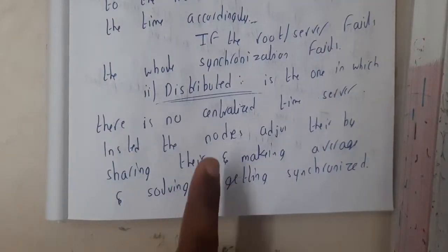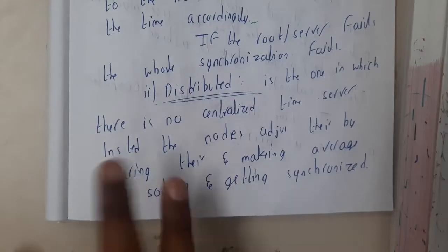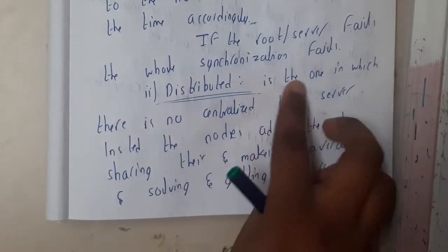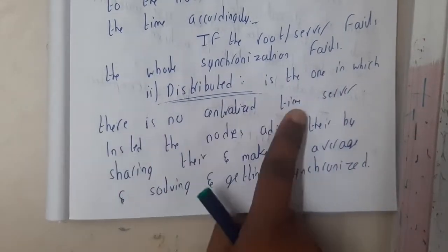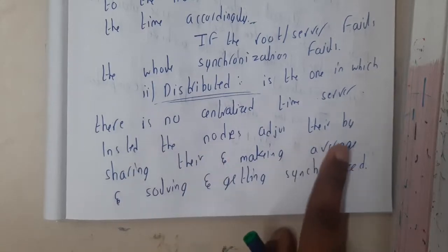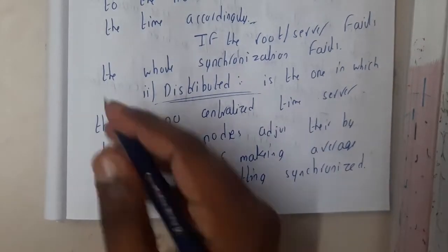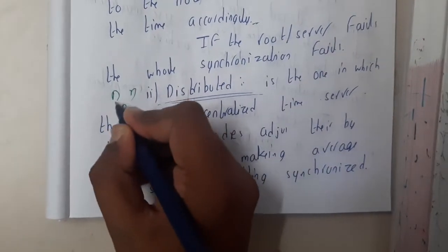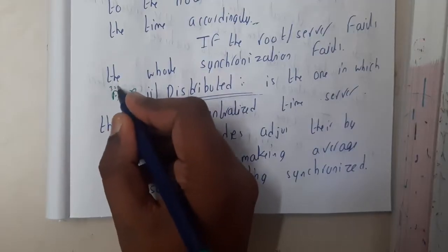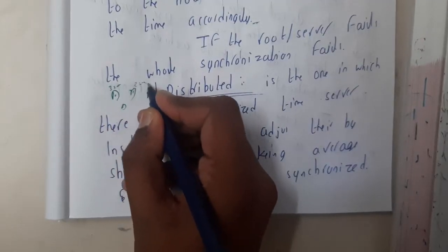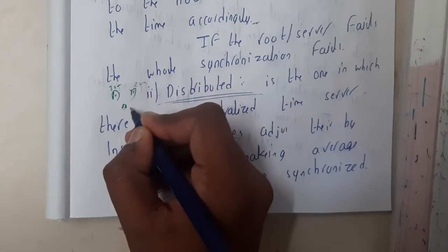Distributed, from the name you can say it is everyone's choice. It is the one in which there is no centralized time server. Instead, nodes adjust by sharing their values. Basically, if there are three nodes, this node will say in my clock it is 3 o'clock, this one will say it is 3:10, and this one will say it is 2:50.